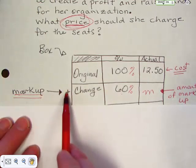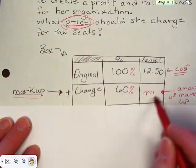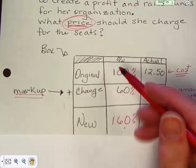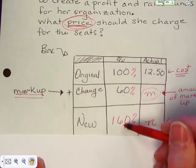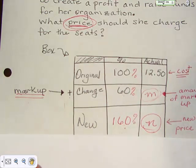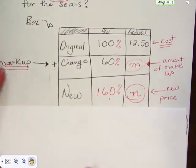The mark up will be a plus. That's a change of sixty percent. We don't know how much that's going to be yet. We do know if we add a hundred plus sixty we get a hundred and sixty percent. And we also know that we don't know that number. We don't know the new price. If we don't know the new price we don't know what to price them at.